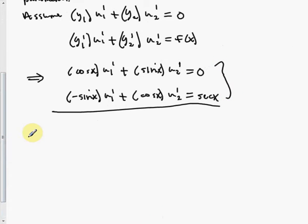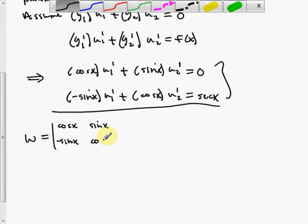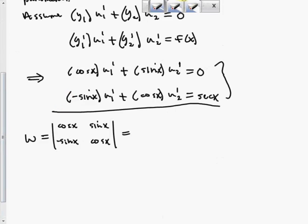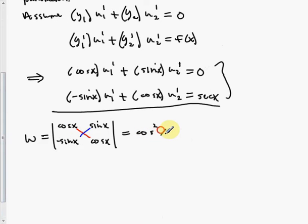From this system, the Wronskian W is the determinant of [cos x, sin x; –sin x, cos x]. Computing: cos x·cos x minus (–sin x·sin x) = cos²x + sin²x = 1. W = 1.